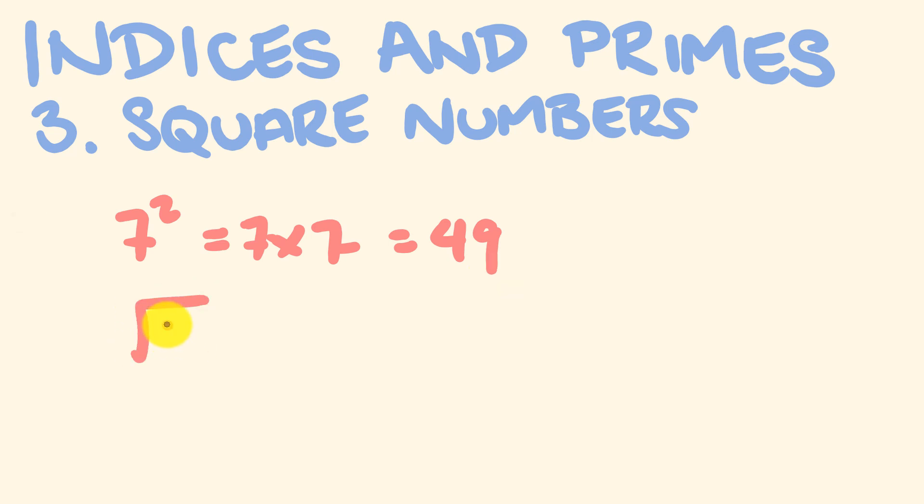So the square root of 49 equals 7. What number do we multiply by itself to get 49? That's what we're asking with the square root—what number do we multiply by itself to get that number?